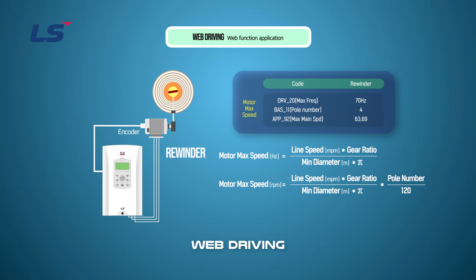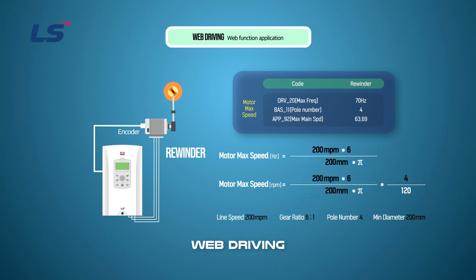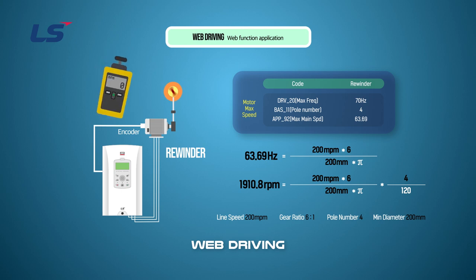In the rewinding operation, the motor speed is the fastest when the bobbin is empty, and this speed must be calculated and set. In order to calculate the maximum motor speed, you need to know the maximum line speed, gear ratio, and minimum diameter. The theoretical maximum speed may differ from the actual line speed due to errors in the gear ratio and mechanical tolerances, so we measure the actual speed with a TACO meter to check the exact minimum speed.